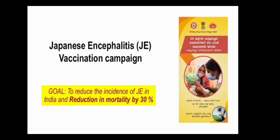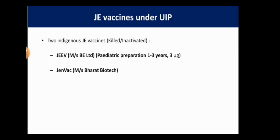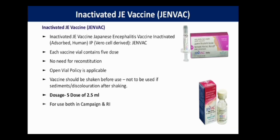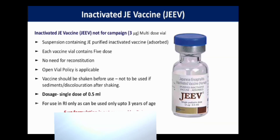The goal of the Japanese Encephalitis vaccine campaign is to reduce the incidence of Japanese Encephalitis in India and achieve a reduction in mortality by 30%. Inactivated JE vaccines available under the Universal Immunization Program currently include two indigenous inactivated (killed) JE vaccines. JEEV is available for the pediatric population aged 1 to 3 years. The inactivated JE vaccine is given in doses of 2.5 ml intramuscularly, with each vial giving 5 doses. A single-dose formulation of 0.5 ml intramuscular is also available.